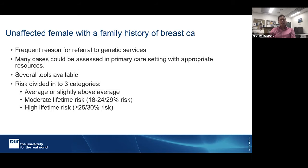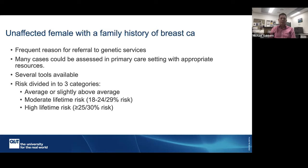What we often find referred to genetic services — and I'll say 'worried well,' though that downplays any emotional suffering — are people with a family history of breast cancer who themselves haven't been affected. There are a lot of these referrals within the system, and it's one of the reasons why it takes so long to see geneticists in the public system. Should you upskill yourself and use the resources available? These women don't necessarily need to be referred to a genetic service. If you familiarize yourself with just a couple of resources, it's quite easy to understand what's a population risk, moderate risk, or high risk family history, and counsel based on that.